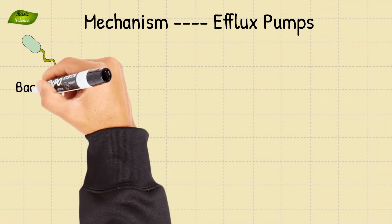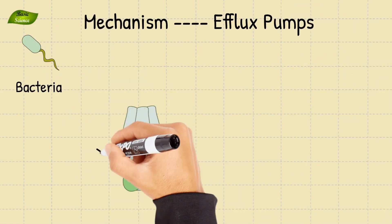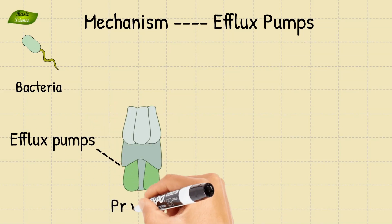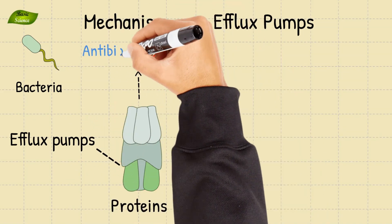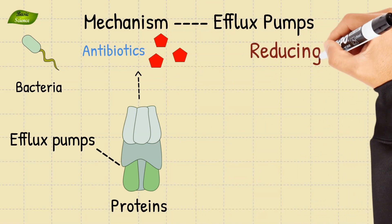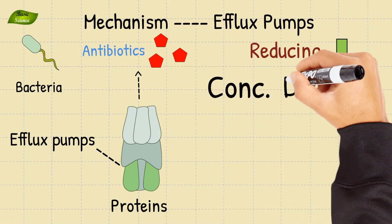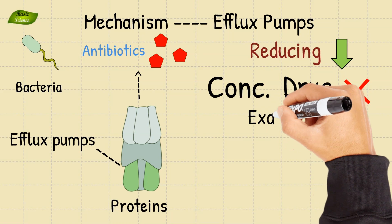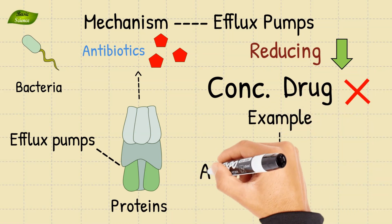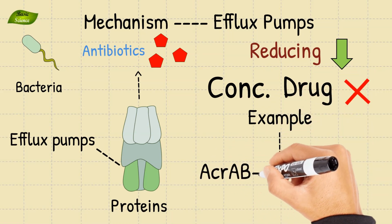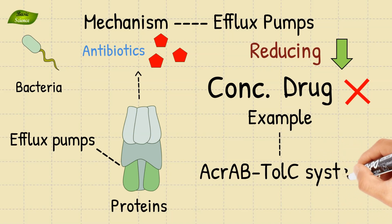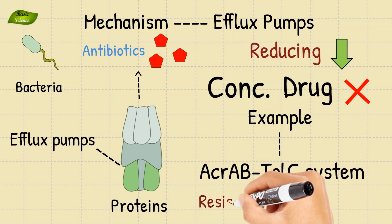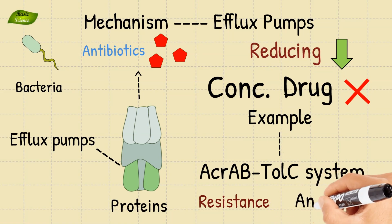Another mechanism is the use of efflux pumps. Bacteria can develop efflux pumps, which are specialized proteins that actively pump out antibiotics from inside the bacterial cell, reducing the intracellular concentration of the drug and limiting its effectiveness. An example of this is the multi-drug efflux pumps, such as the AcrAB-TolC system, found in many bacteria contributing to resistance against various antibiotics.